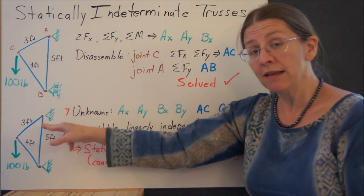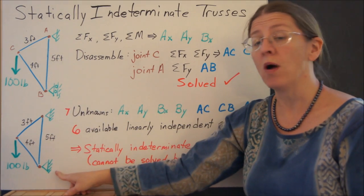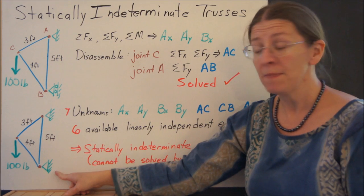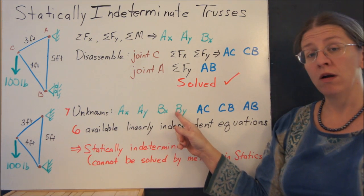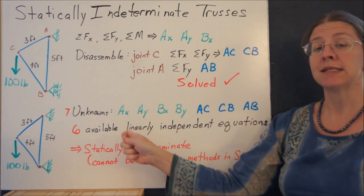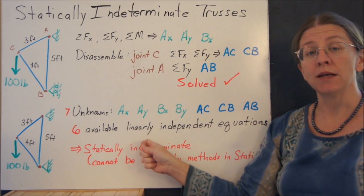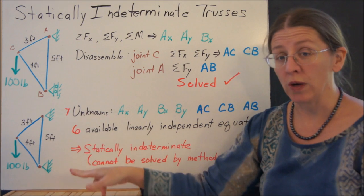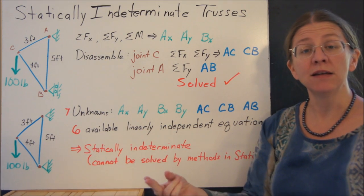For example, if I take exactly the same truss and replace the bottom roller with a pin, now I have four external reactions and three members. But I still only get six linearly independent equations for the three joints. So if I have n joints, I get 2n equations.